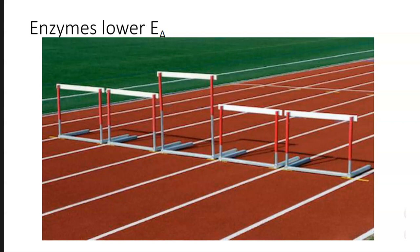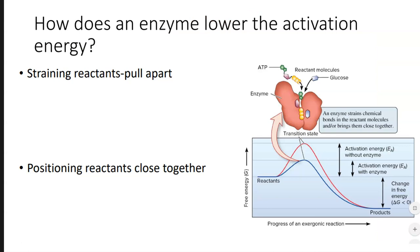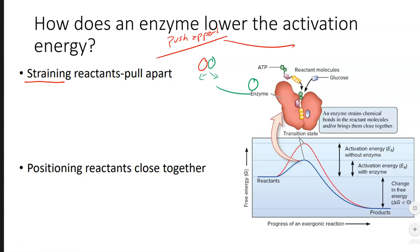So I told you enzymes work by lowering activation energy, but we need to think about how that works — especially for questions where I ask you to explain how or why this occurs. An enzyme lowers the activation energy by doing two things: it's either going to push things apart or pull things apart. We call that straining the reaction. So let's say part of the reaction involves taking something red and something green and separating them. The enzyme works to push the green way over here and the red way over here — essentially pulling them apart.